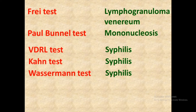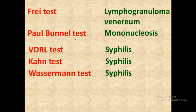For the diagnosis of lymphogranuloma venereum, the Frei test is used. For the diagnosis of mononucleosis, the Paul Bunnell test is used.